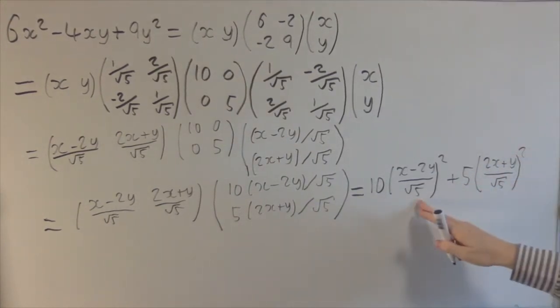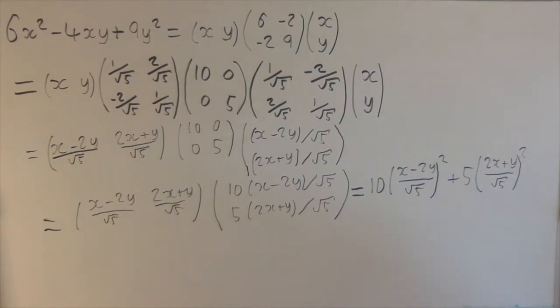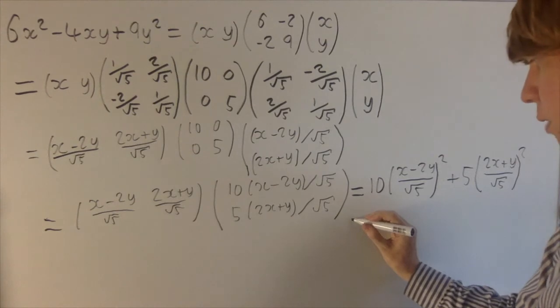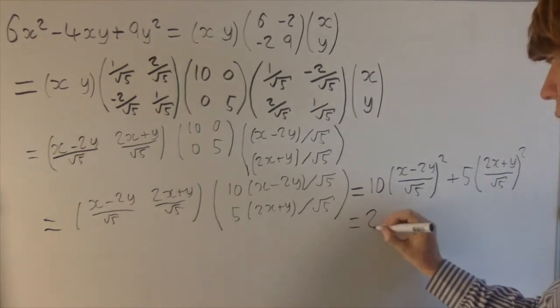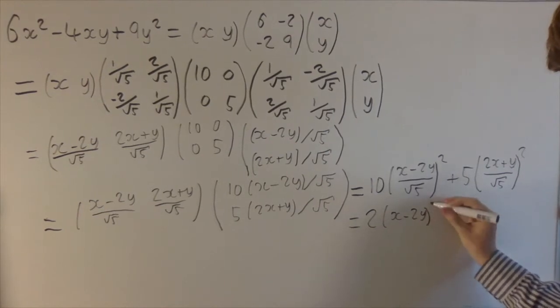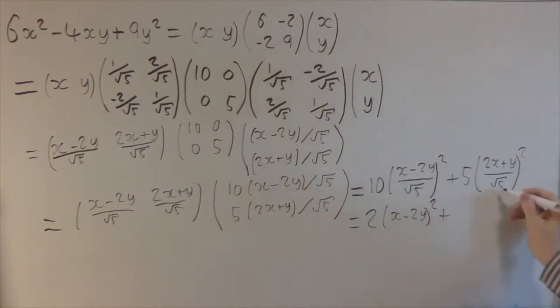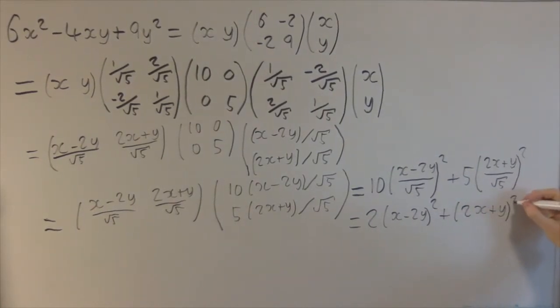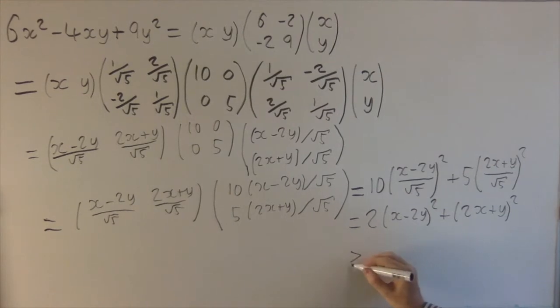And what we can do here is we've got the 1 over root 5, so you take out a factor of 1 over root 5 squared, so that's just taking out a factor of a fifth. This becomes really nice. You'll get 10 times x minus 2y all squared, plus, so the 1 over 5 cancels with this, so you're just left with 2x plus y all squared. And clearly this is greater than or equal to 0 because it's the sum of two squares of real numbers.